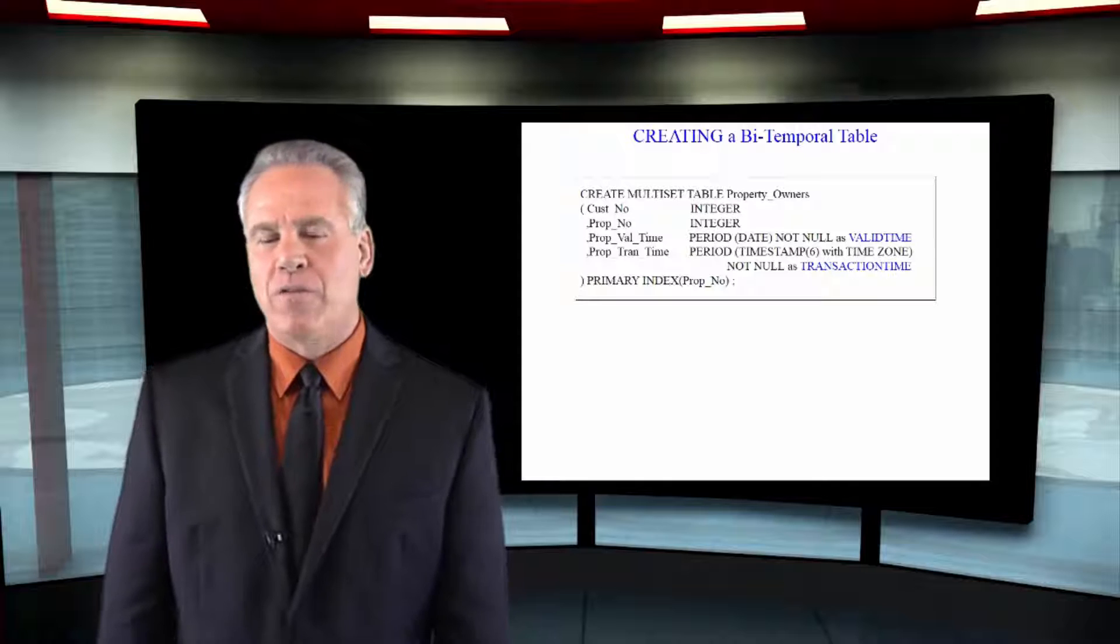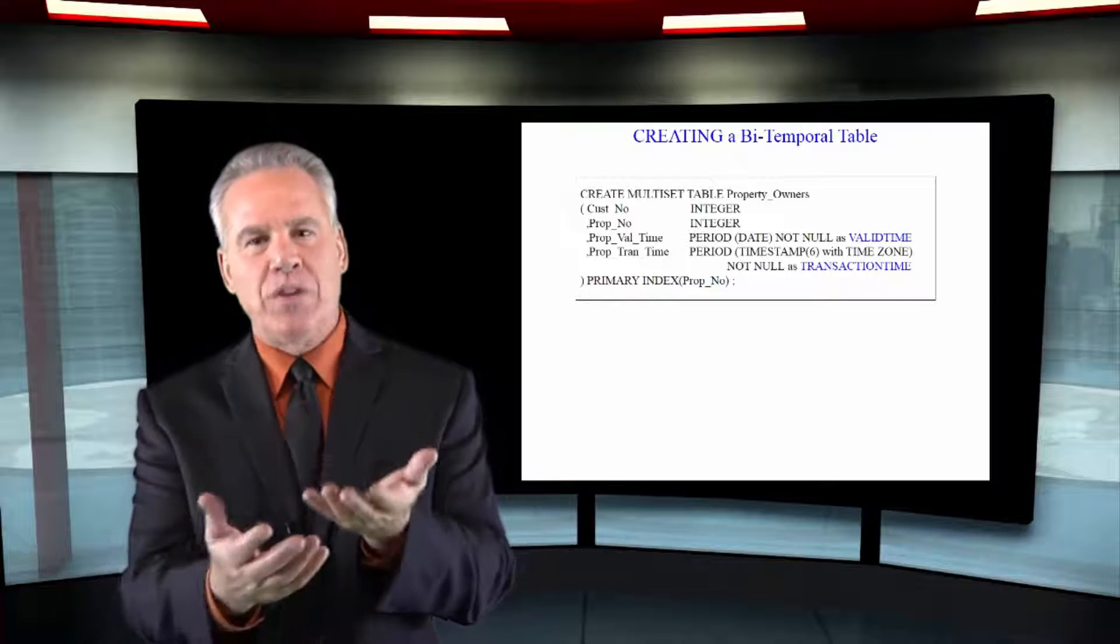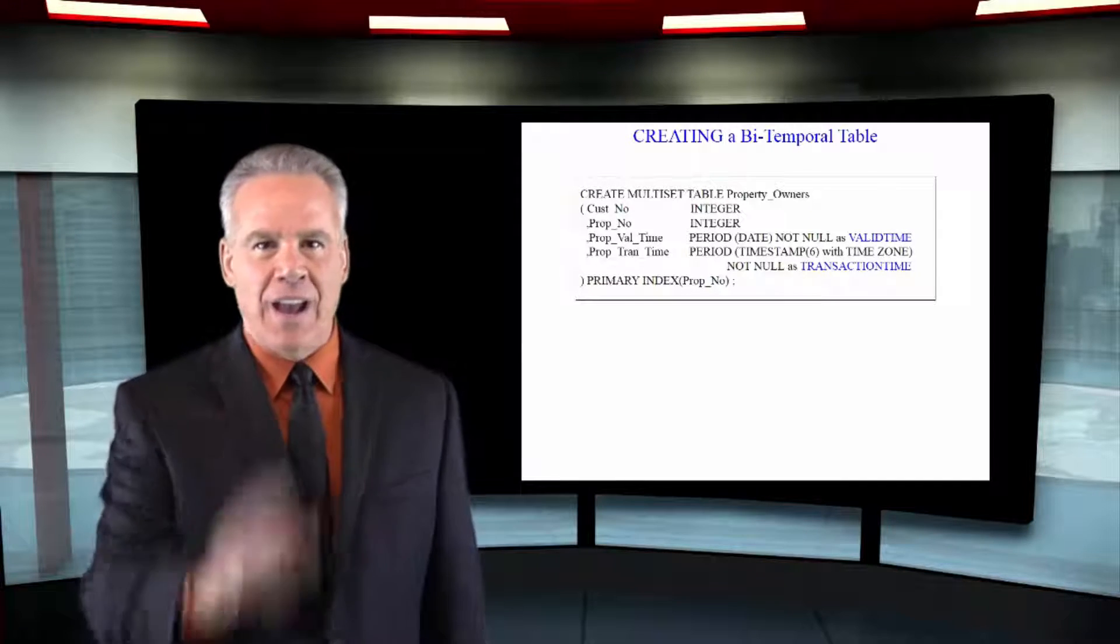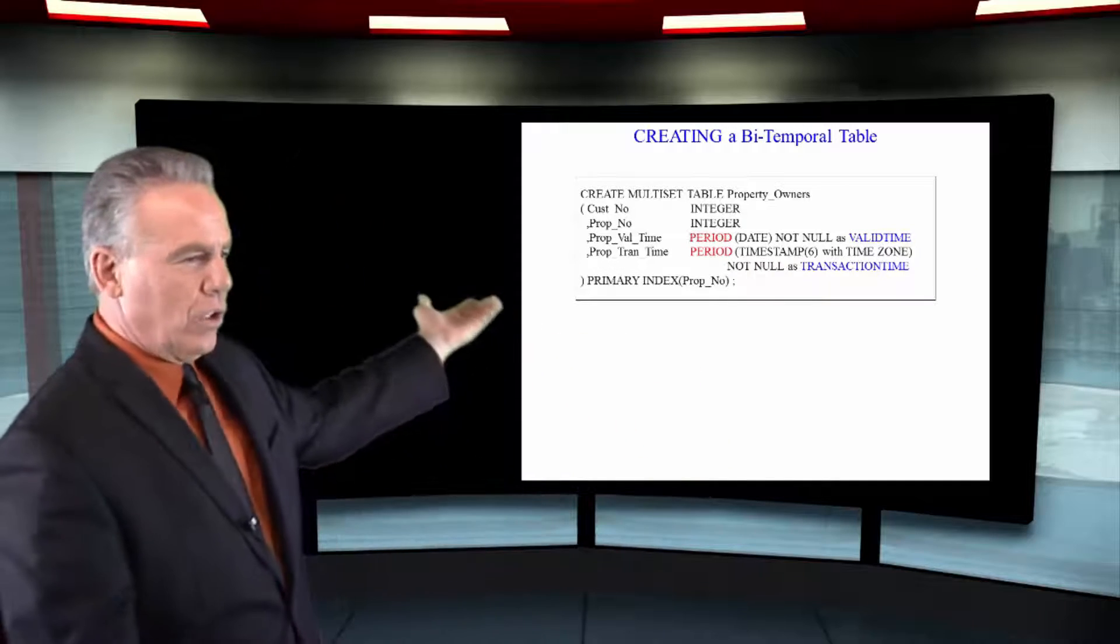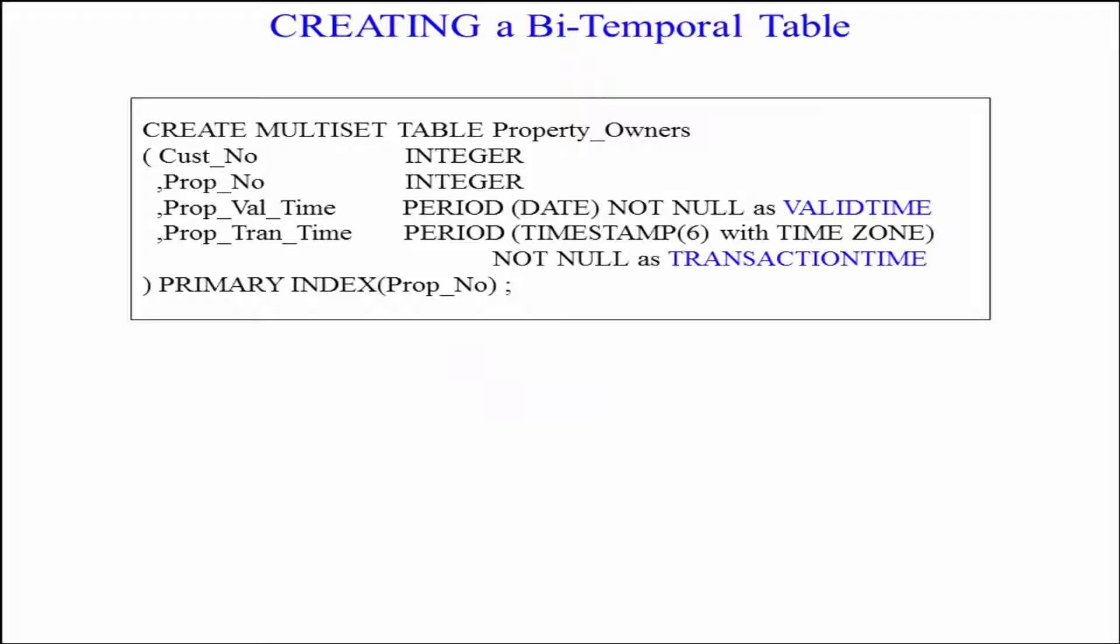Here's an example of creating a bitemporal table with both valid time and transaction time. Notice a few things here. First of all, look at the data type of a period data type.